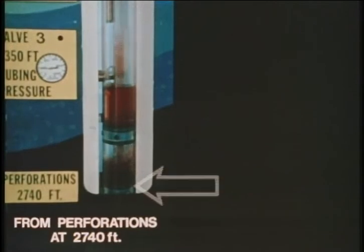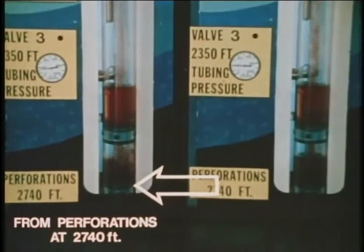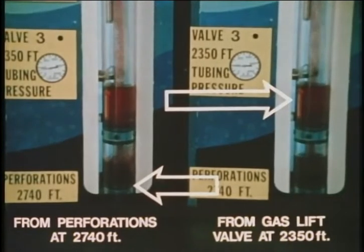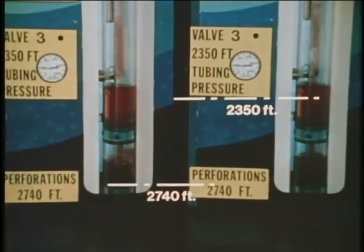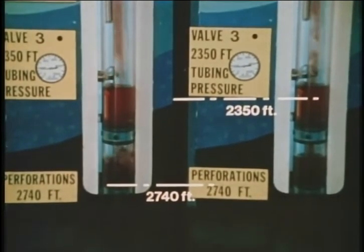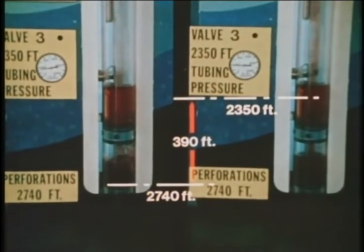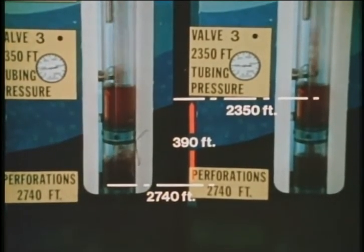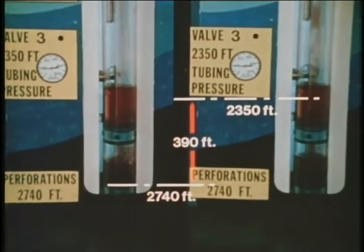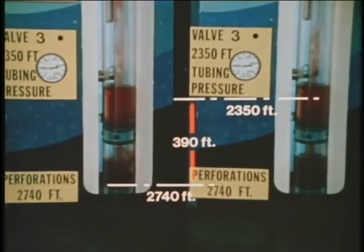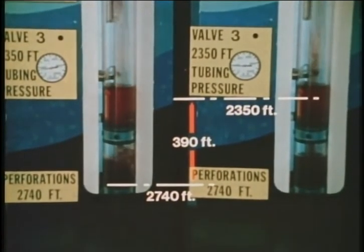In film number two we saw that for any given well, as the flowing bottom hole pressure increases, production decreases — which is what we see here. But what caused the flowing bottom hole pressure to increase? The 400 mcf per day gas from formation was reducing the pressure gradient in the tubing all the way from the perforations at 2,740 feet to the surface. But the 400 mcf per day input gas at the 2,350 foot gas lift valve was reducing the pressure gradient in the tubing only from 2,350 feet to the surface. Hence the 390 feet of tubing below the bottom gas lift valve at 2,350 feet to the perforations at 2,740 feet contains no gas, and since its gradient is not decreased, it exerts more pressure on the formation. Consequently the flowing bottom hole pressure is higher by 50 psi and production is less by 100 barrels per day.